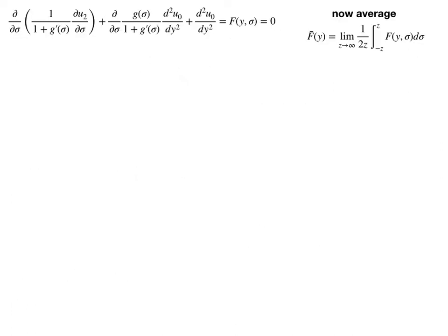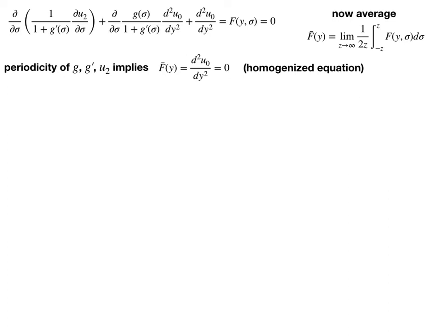After cancellation, we can set this equal to zero. If we average this equation, anything depending on sigma averages to zero due to the periodicity of g, g-prime, and u2. The only non-periodic term that survives is the d²u0/dy² part. So this is now our homogenized equation — just a second-order equation for u0. In this case, the heterogeneity has no effect on the mean field. This whole exercise demonstrates that if we have periodic inhomogeneities and just try to average them out directly, we're going to miss something about the impact of periodic diffusion on the dynamics.